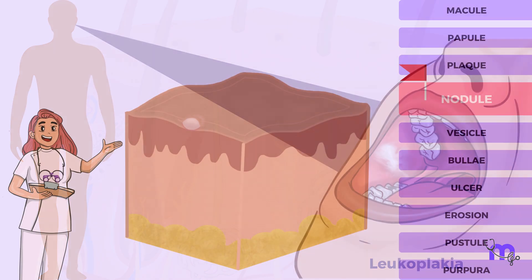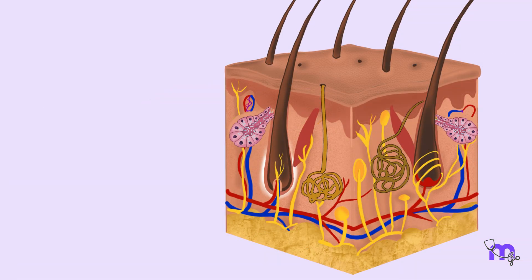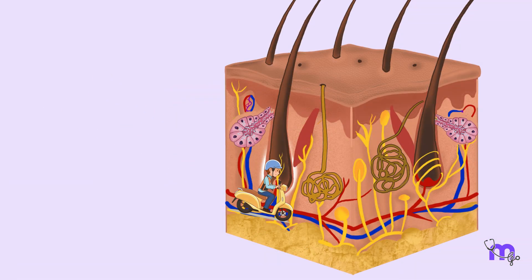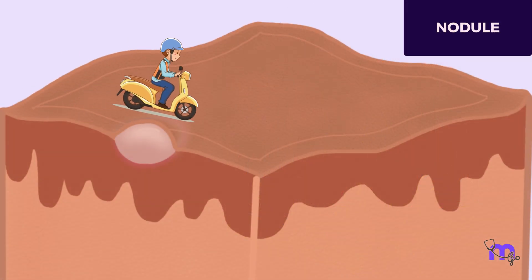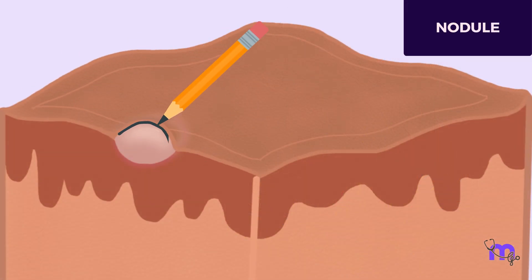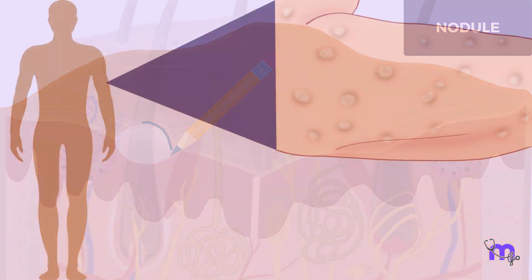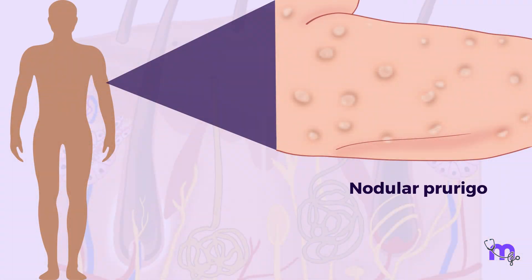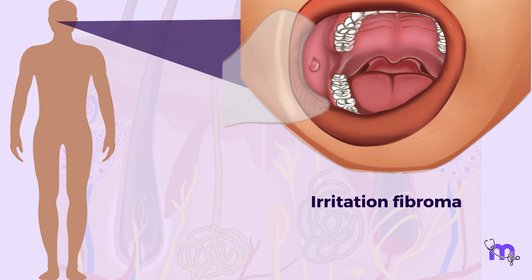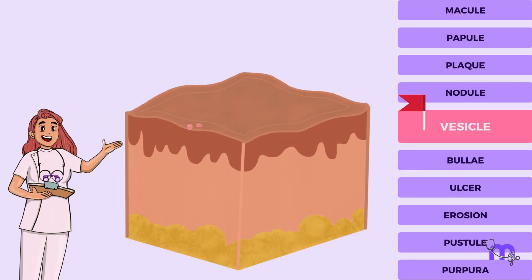Next is a nodule. This is a lesion that develops deeper within the dermis or mucosa. They rise above the surface and typically have a rounded dome-like shape. Nodular prurigo is a skin condition that shows nodules. Irritation fibroma is an example of a nodule that develops on the oral mucosa.